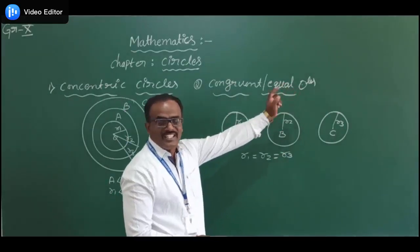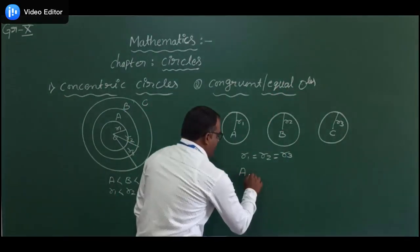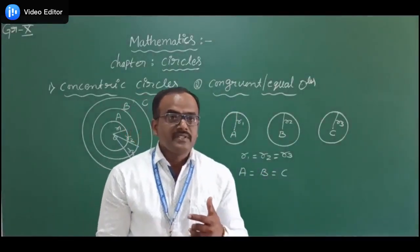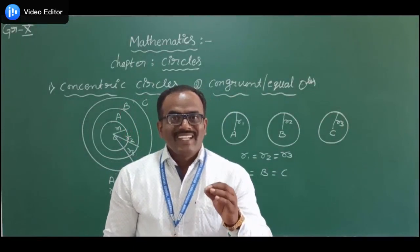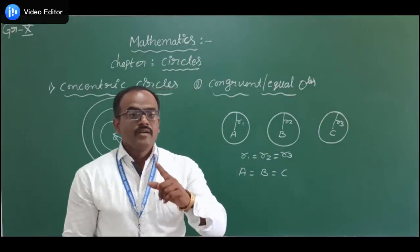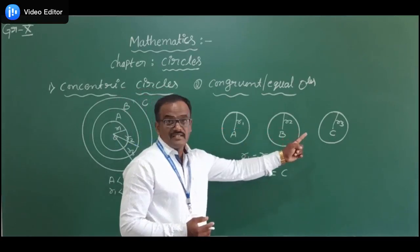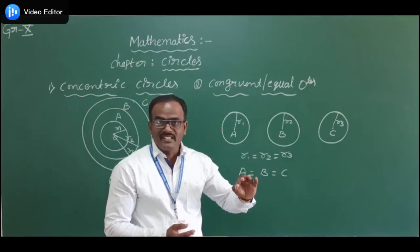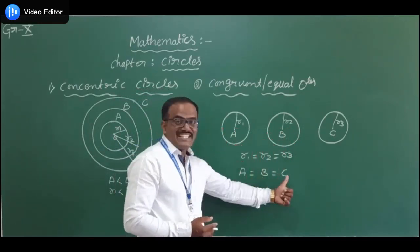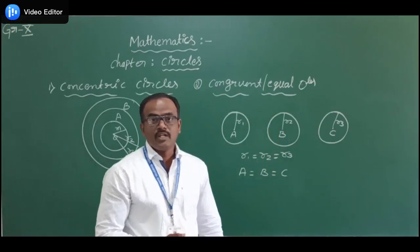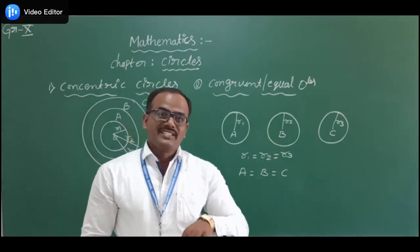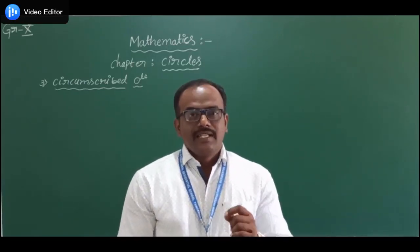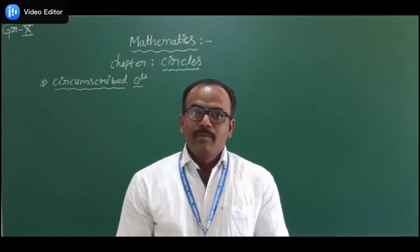Therefore all three circles are said to be congruent or equal circles. So circle A equals circle B equals circle C. The meaning of congruent circles: circles which are having the same radius but different centers. All three circles have the same measurement of radius but different centers, so they are said to be congruent circles.